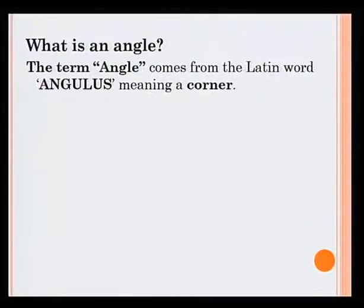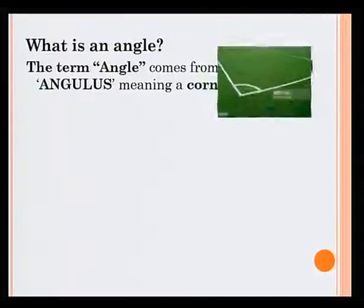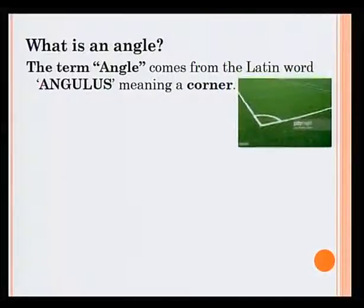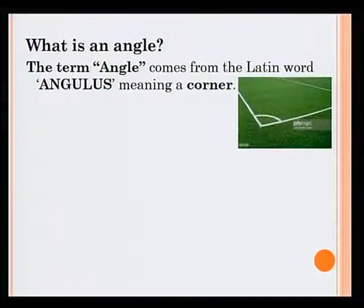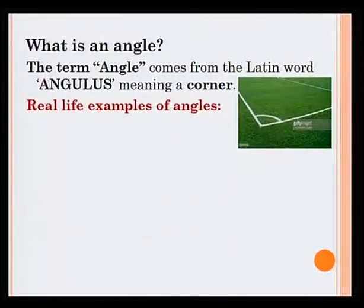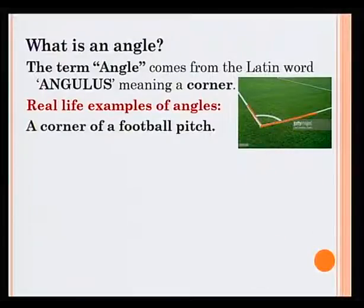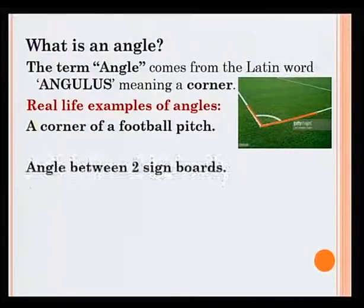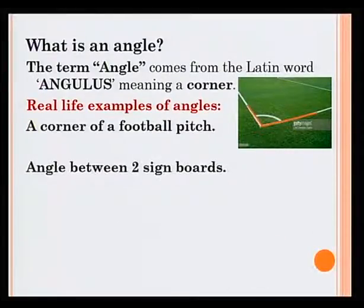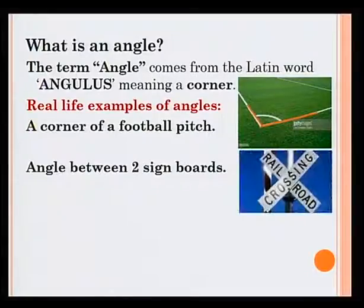The term angle comes from the Latin word angulus, meaning a corner. For example, a corner of a football pitch, or the angle between two sign boards.